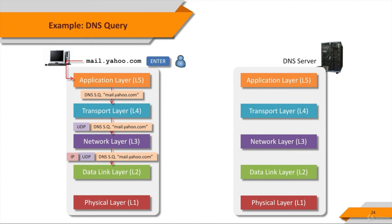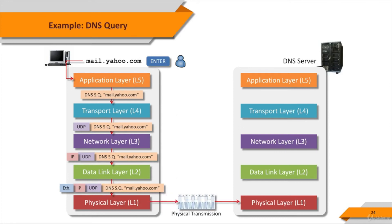The newly formed packet is then passed down to layer 2. The data link layer creates a new data unit, called a frame, by adding the layer 2 frame header, which is the Ethernet header. Like layer 3, an addressing structure is also applied in the layer 2 header — that is, the MAC address. The frame is then passed down to the physical layer, which converts the information into 0 and 1 bits that are sent over the physical media using electrical signals, on a copper link, for instance. Finally, the data is sent over the wire using a wide variety of methods, such as Ethernet or token ring.